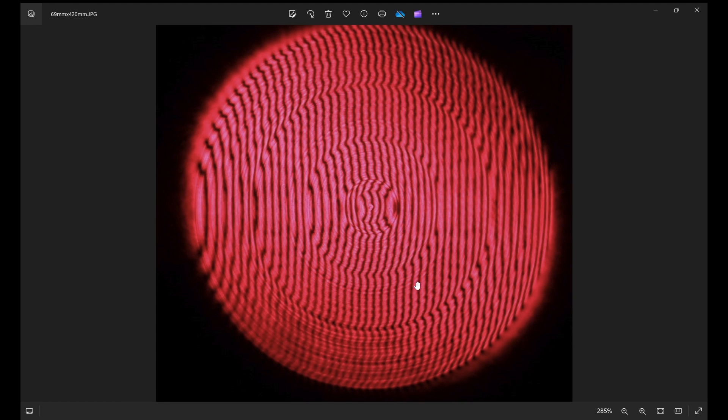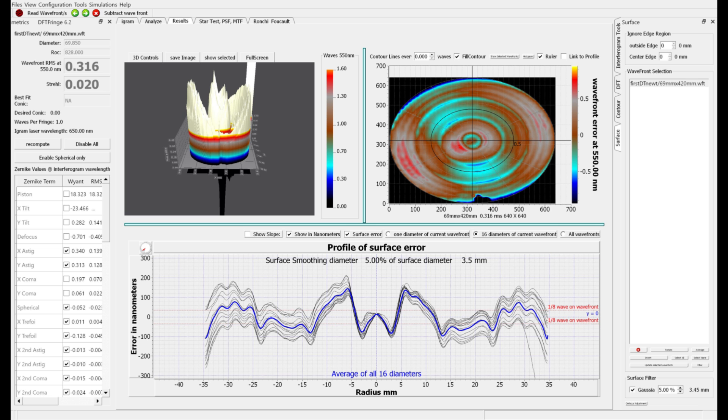And honestly, not great, but better than I was expecting for a first go and a completely visual tool offset setting. So down here on the bottom, I have the plot set up where we're looking at the surface error, not the wavefront error, but the surface error, which is half of the wavefront error. So this is a readout in nanometers.